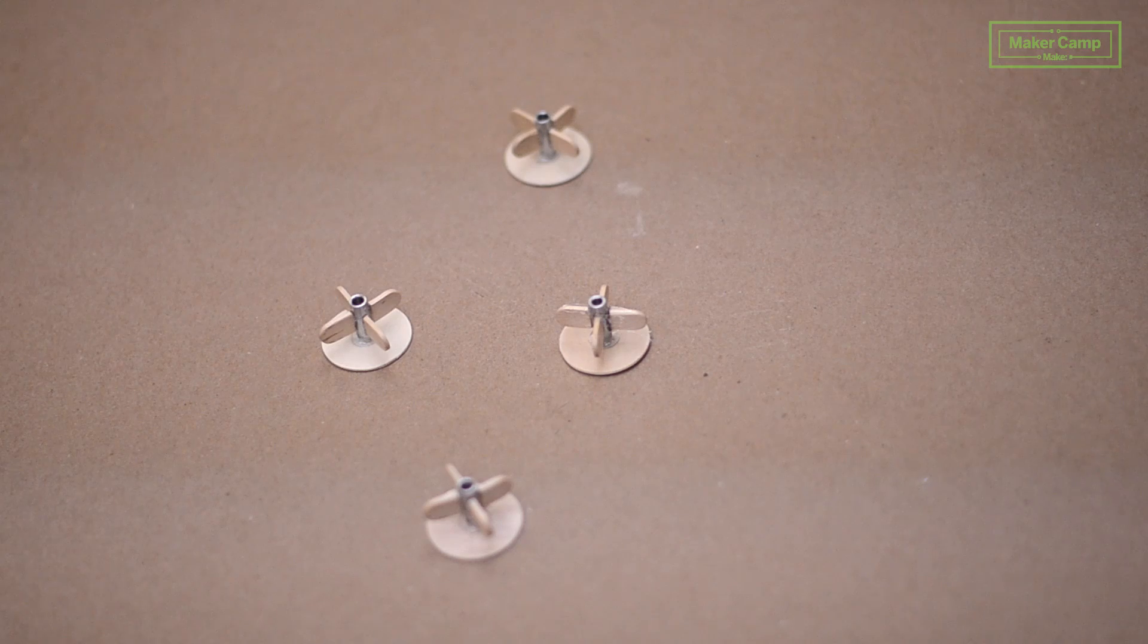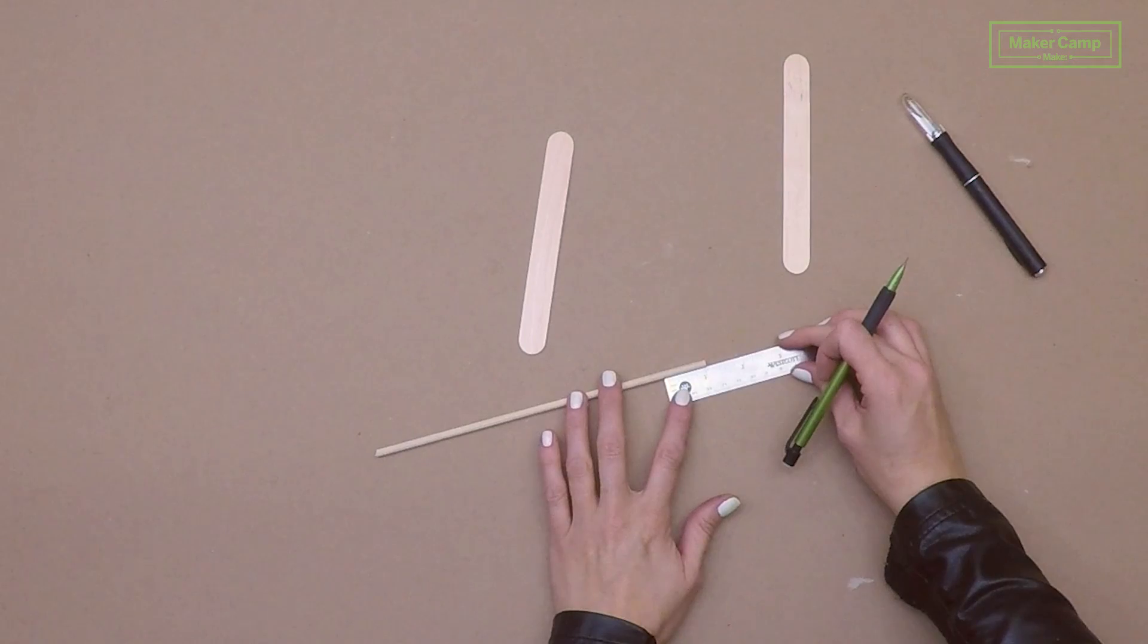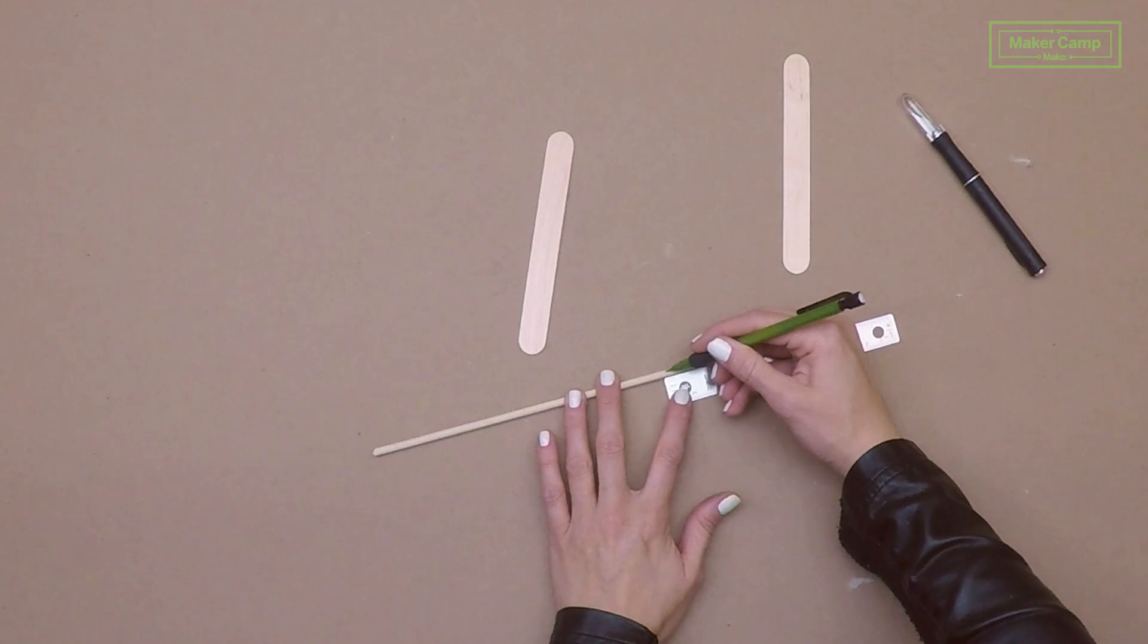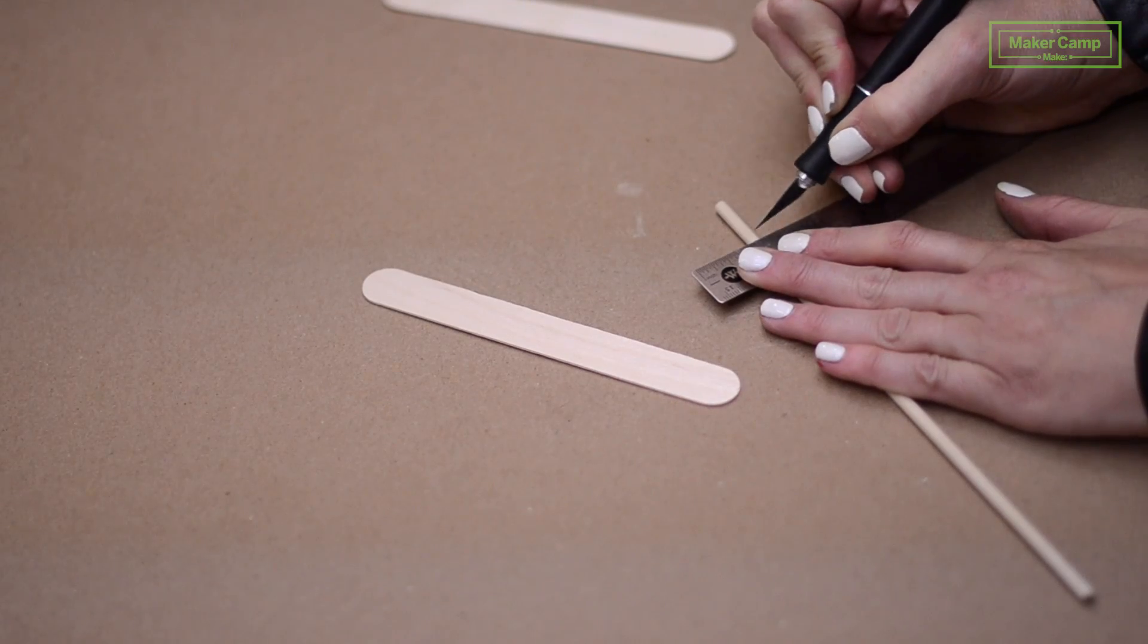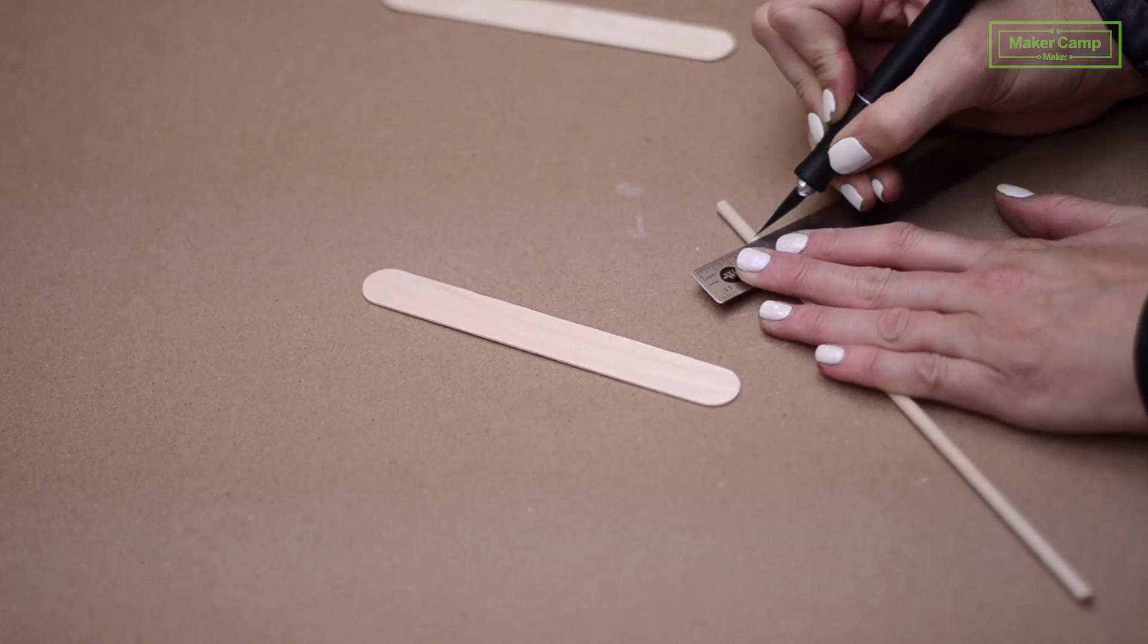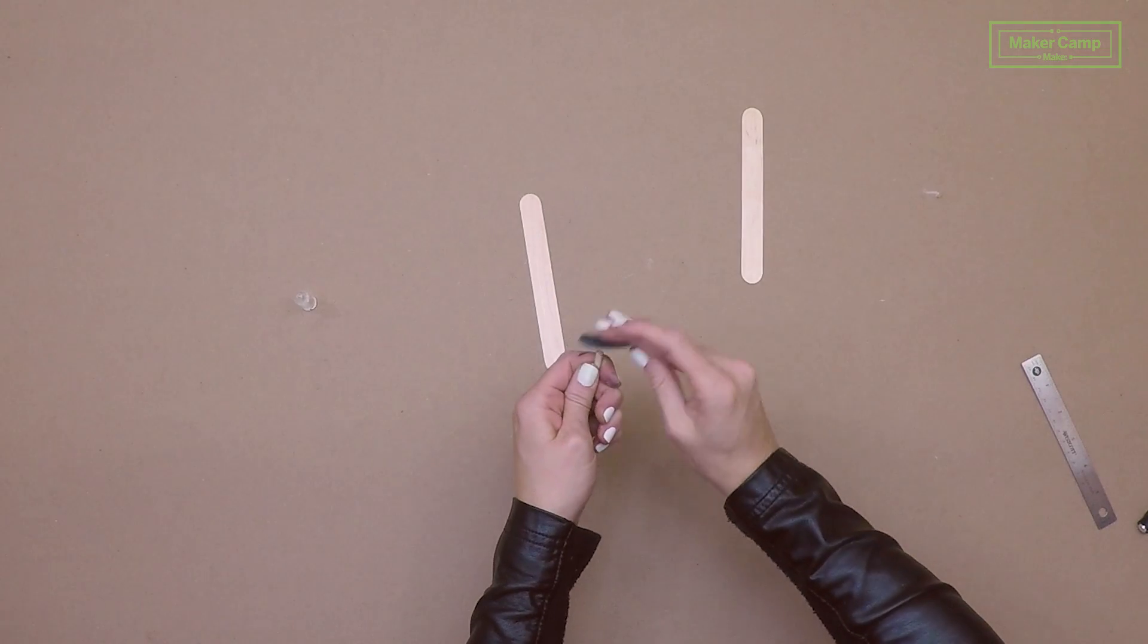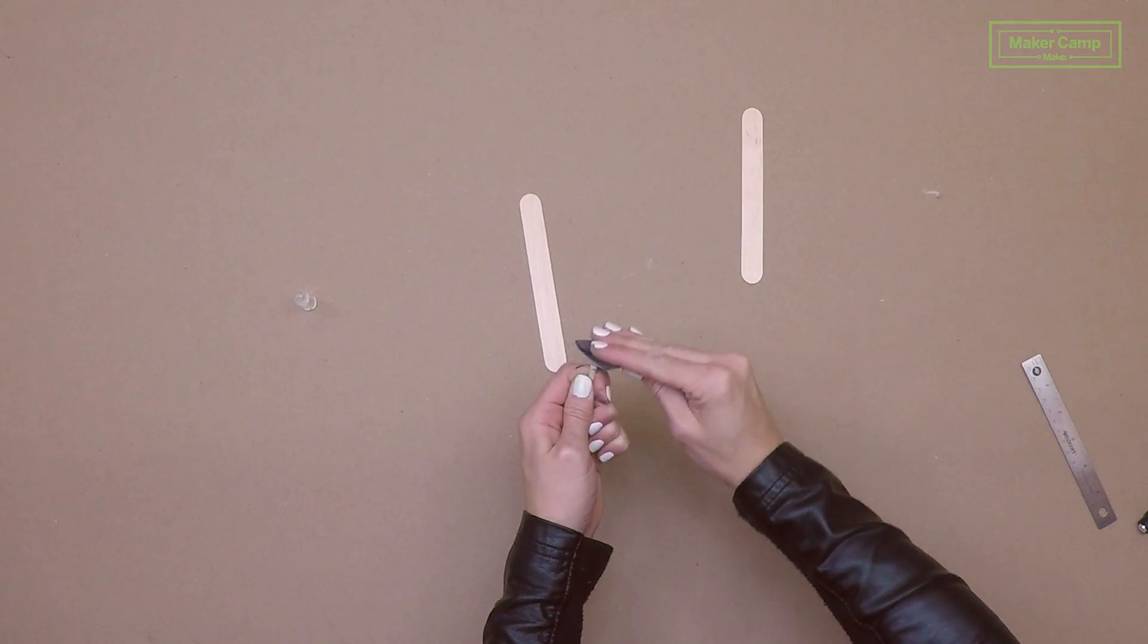Alright, now we're going to make our ball launcher. Cut a three sixteenths dowel about a half an inch long. Sand the ends. Next, you're going to glue your two tongue depressors together, but off-center them just a hair.